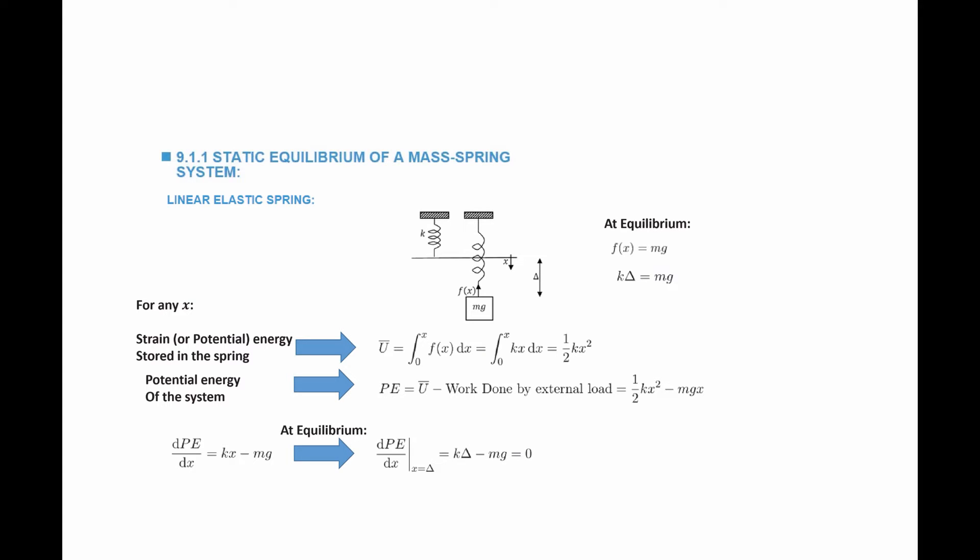We notice that this rate of change of potential energy with respect to x, if we substitute the condition of equilibrium where x equals delta, we get k delta minus mg equals zero. This implies that at equilibrium the rate of change of potential energy is equal to zero, meaning the potential energy is either maximum or minimum at equilibrium. To differentiate between maximum and minimum, we calculate the second derivative of the potential energy with respect to x, which equals k. Since k is positive, the potential energy is minimum at equilibrium. So by minimizing this quantity — internal energy minus work done — we obtain equilibrium.